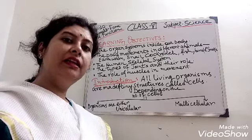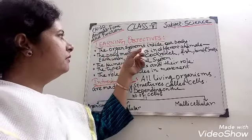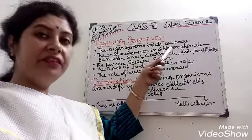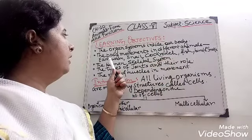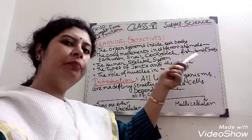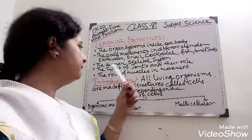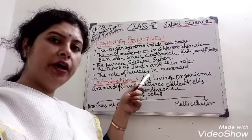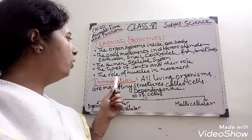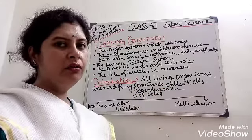The learning objectives are: the organ systems inside our body, body movements in different animals like earthworm, snail, cockroach, fish, bird and snake, the human skeletal system, the types of joints and their role in the movement of body, and the role of muscles in movement.